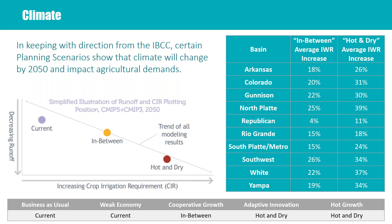The climate adjustment was relatively prescribed and clearly called out by the Colorado Water Plan. In keeping with the direction from the IBCC, certain planning scenarios show that climate will change by 2050, and it was our job to look at how that climate would impact agricultural demands. We are using current existing climate in the business as usual and weak economy planning scenarios. The in-between climate scenario — between current and hot and dry — is used for the cooperative growth scenario, with some increasing irrigation water requirements. The hot and dry climate projection is used for the adaptive innovation and hot growth scenarios.